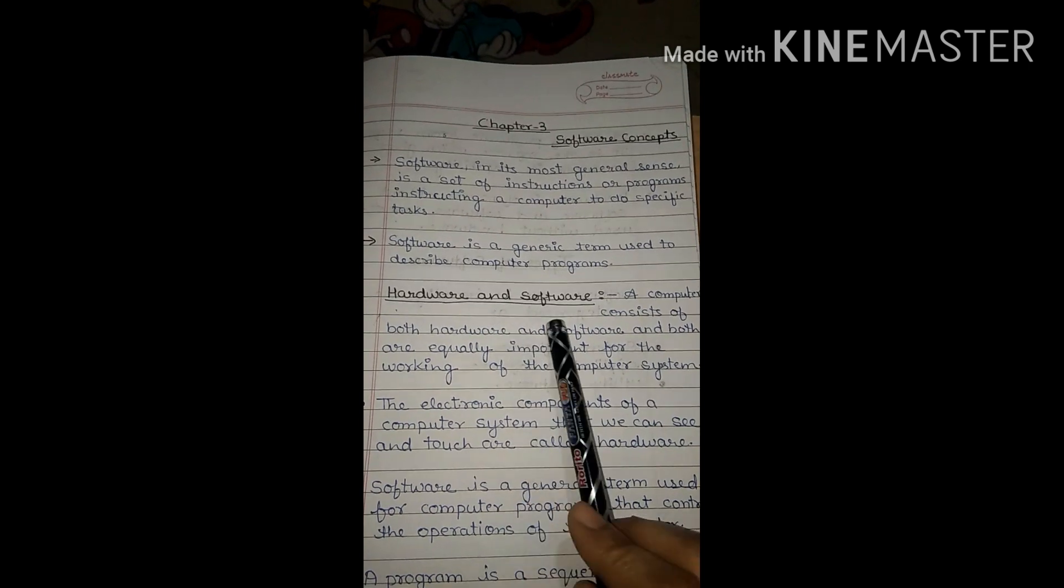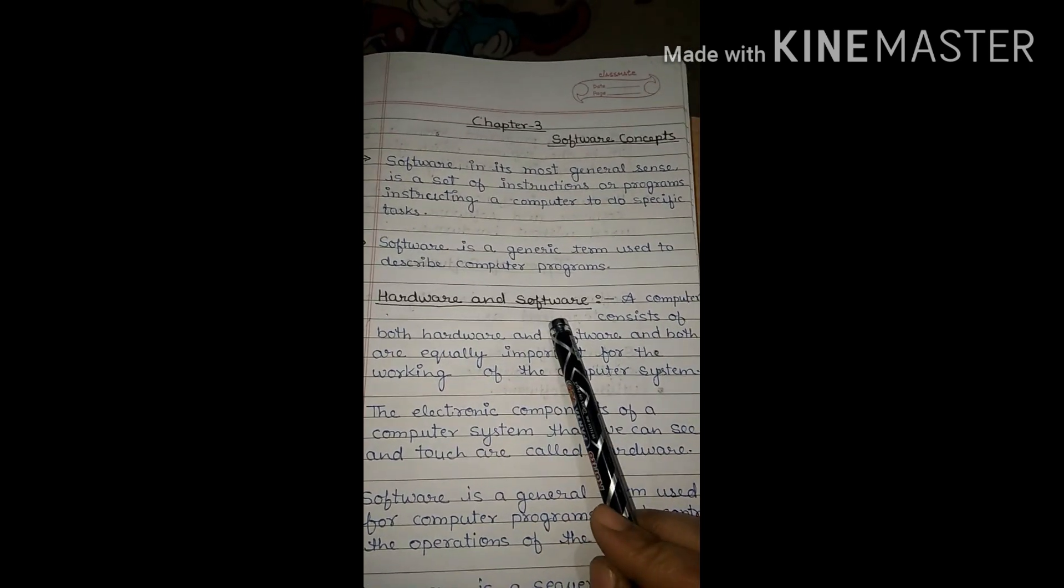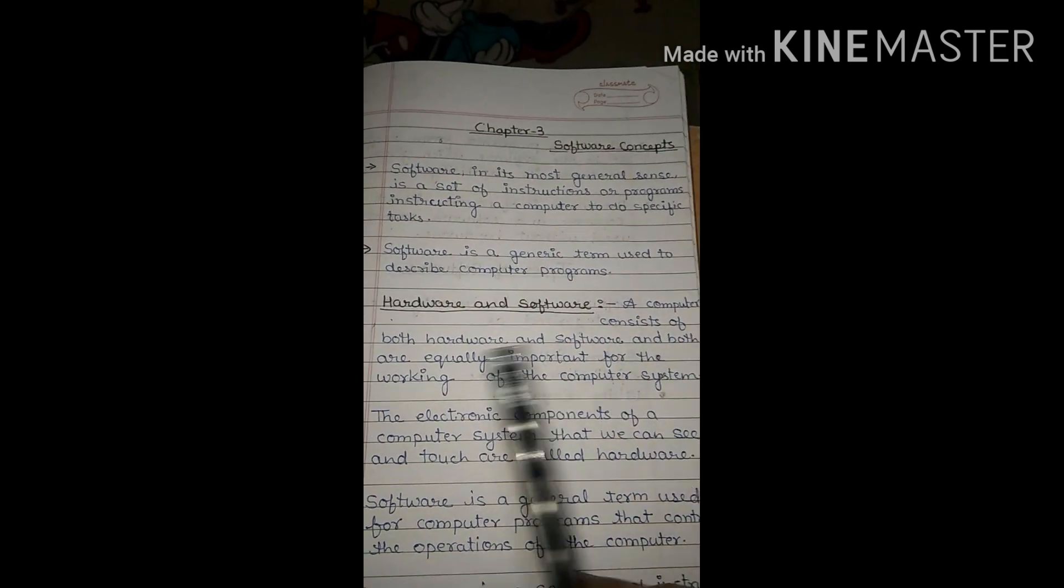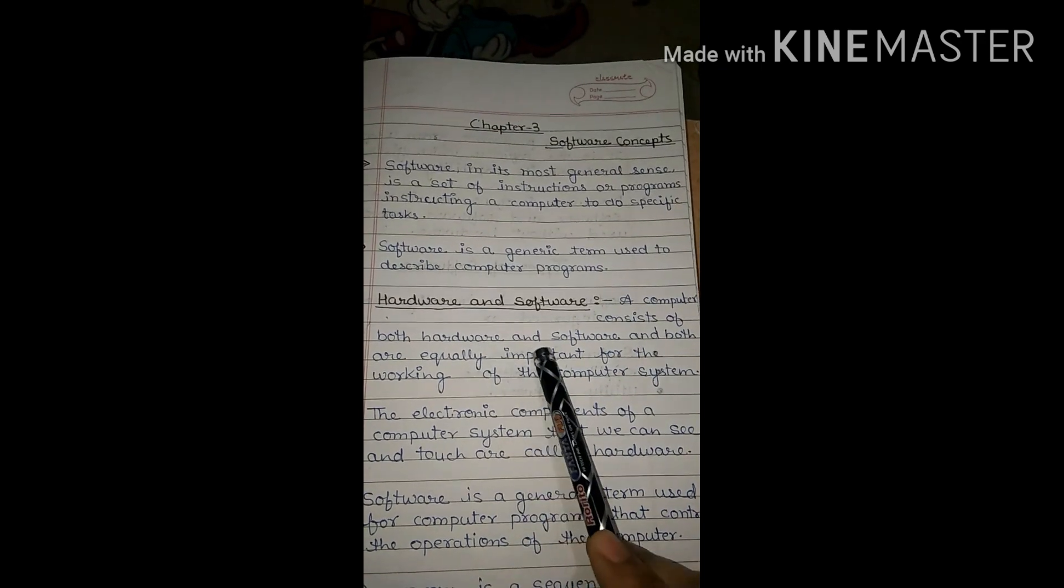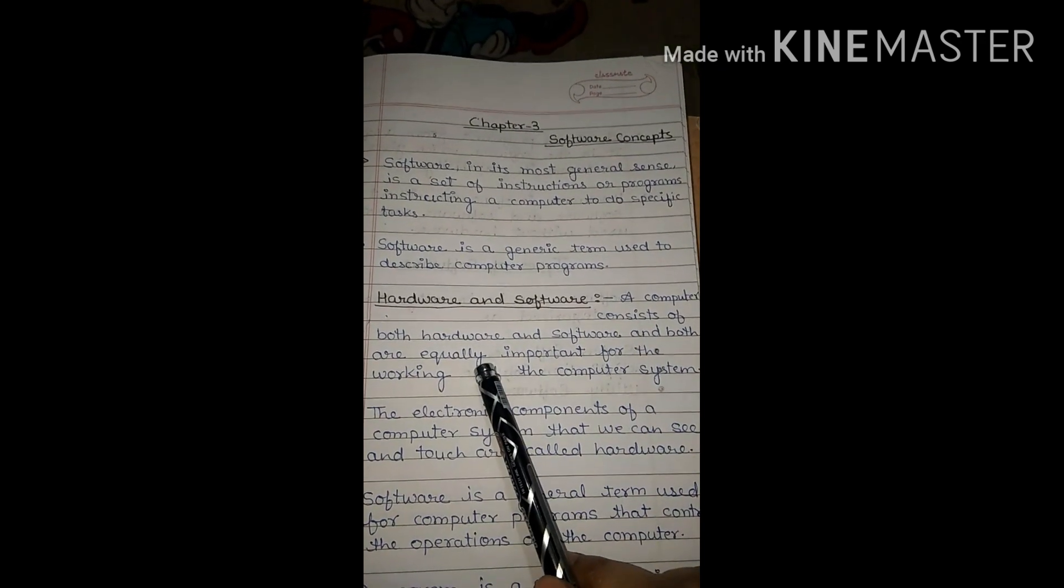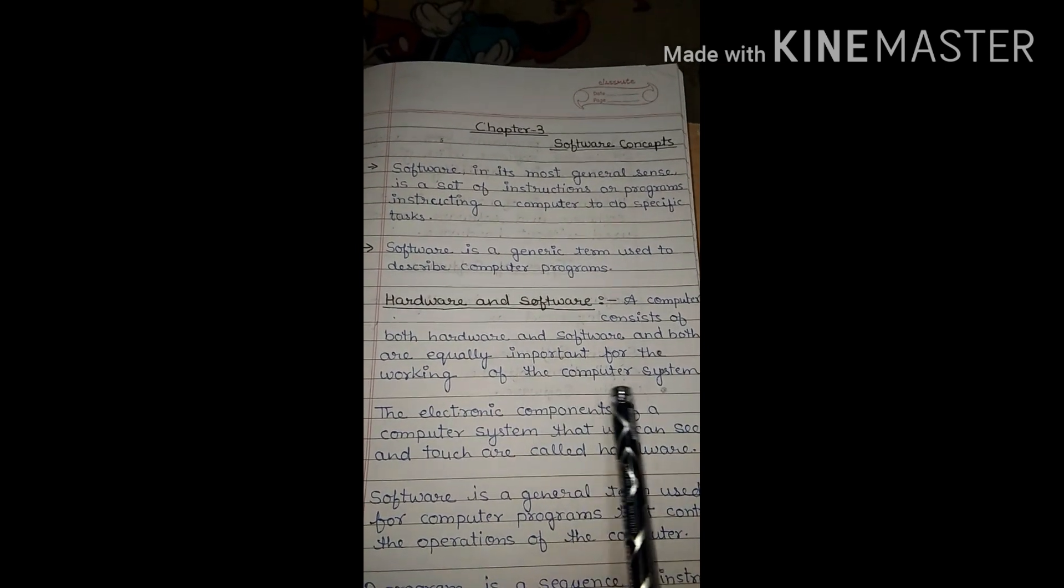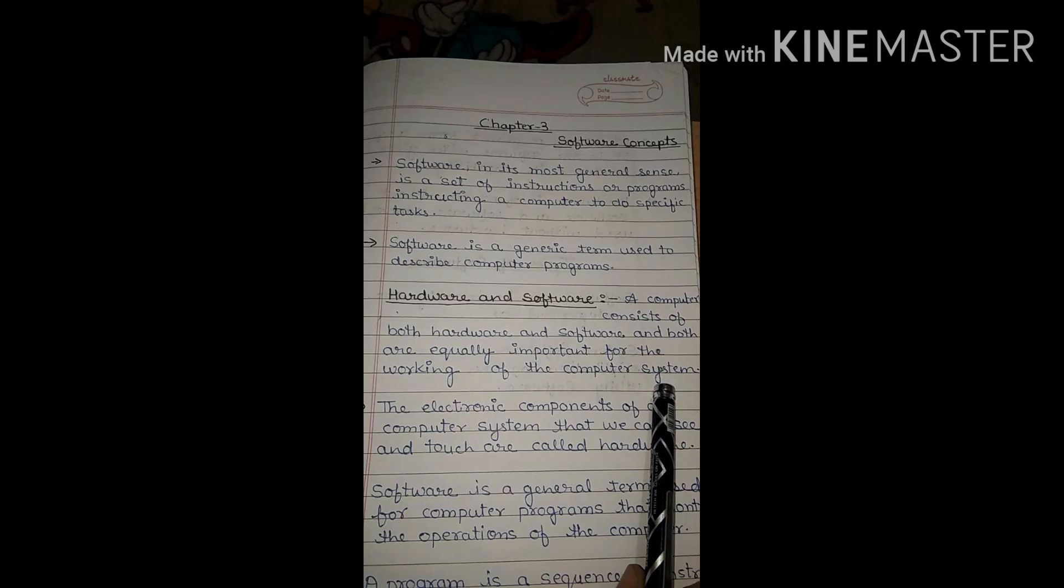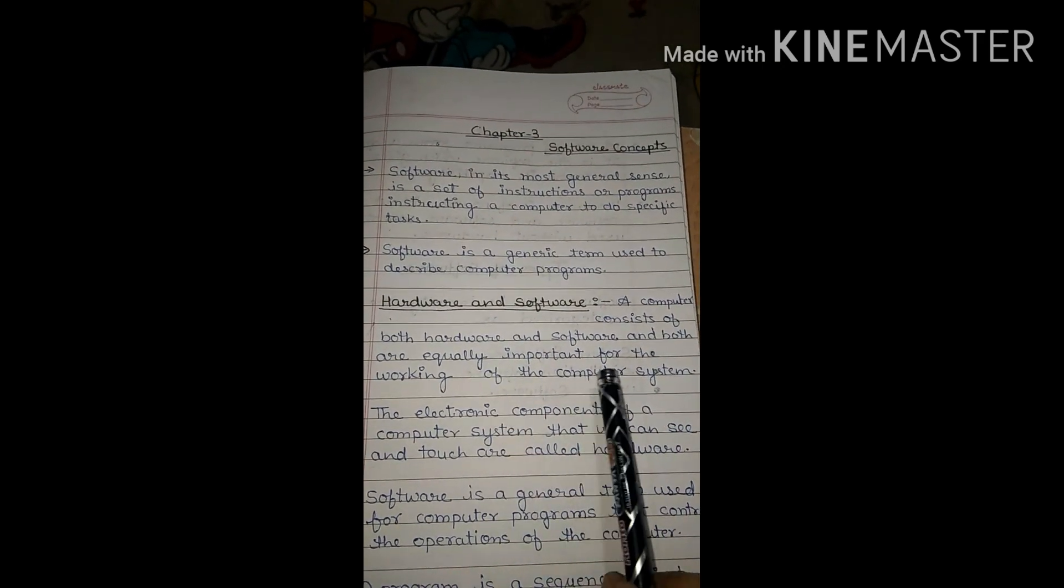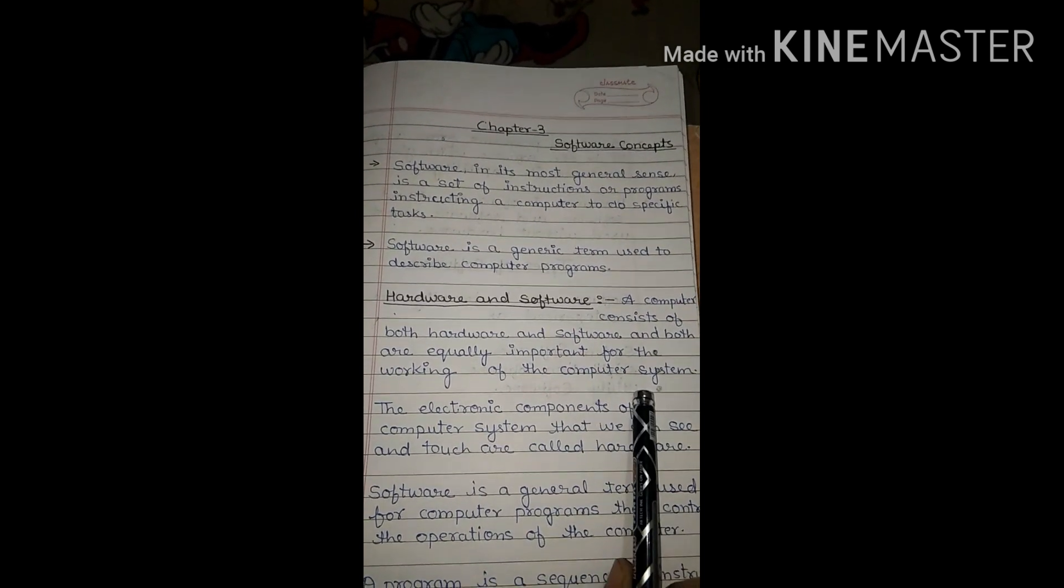Hardware and software. What is hardware and what is software? A computer consists of both hardware and software, and both are equally important for the working of the computer system. Hardware and software - you need to know about their importance in the computer system.